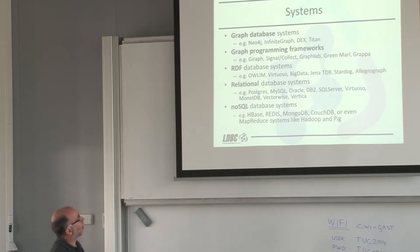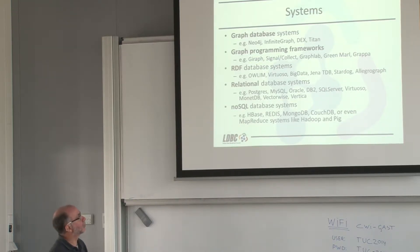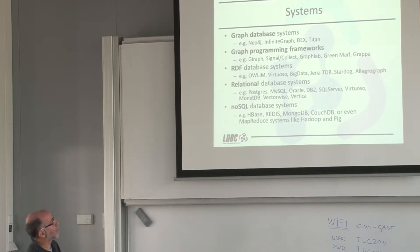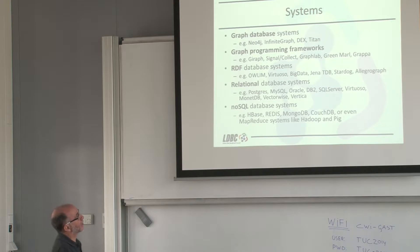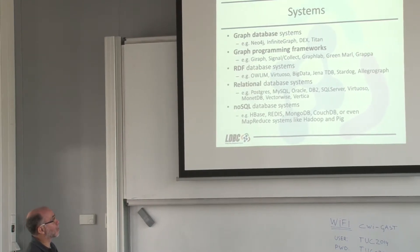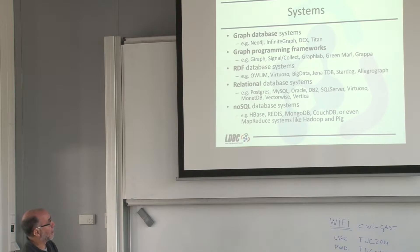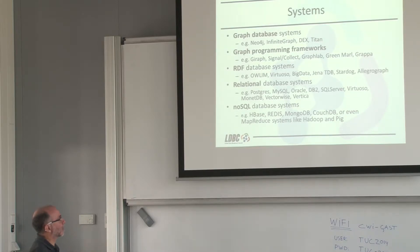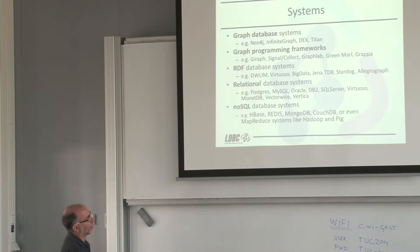We also wanted to provide the benchmark to different systems. This means we cannot think that only RDF or only graph databases are going to run this benchmark. We also have graph programming frameworks, which are not usually persistent but are very efficient in large SMP or distributed systems. We have classical relational database systems, and finally a new group called NoSQL, ranging from HBase to MongoDB, document databases, or other MapReduce systems.